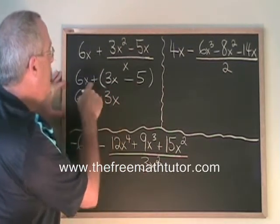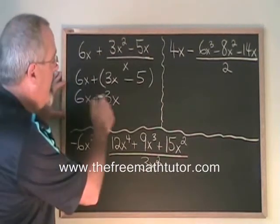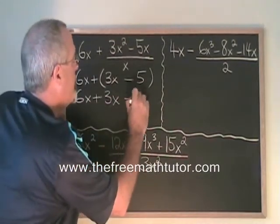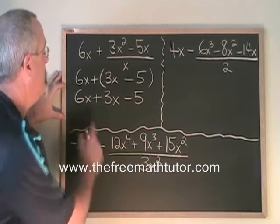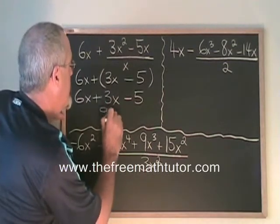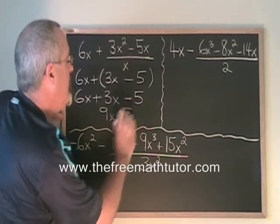But this time, because there was a plus sign before it, nothing is changing on the inside. And then I combine my similar terms and give my final answer. 6x plus 3x is 9x minus 5 is the answer.